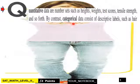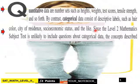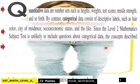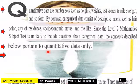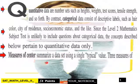By contrast, categorical data consists of descriptive labels such as hair color, city of residence, social economic status, and the like. Since the level 2 mathematics subject test is unlikely to include questions about categorical data, the concepts described below pertain to quantitative data only.